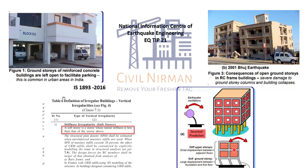As per the latest code, the definition for soft story is in Table 6: a soft story is a story whose lateral stiffness is less than that of the story above. In the previous version IS 1893-2002 there is a slight variation in this definition, and this modification has also been implemented. Make sure when you are using the latest version of the code there will be some changes in the STAAD.Pro methodology as well. We are going to discuss both methods — how it was calculated in the previous version IS 1893-2002 and in the updated version.